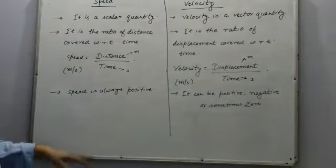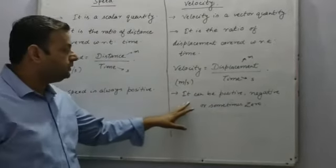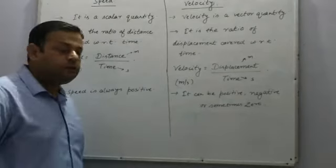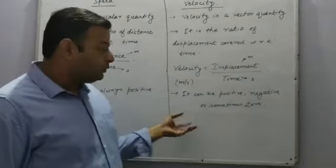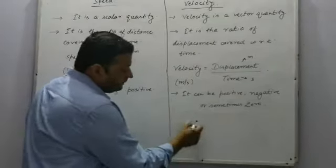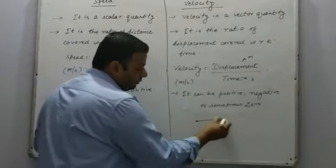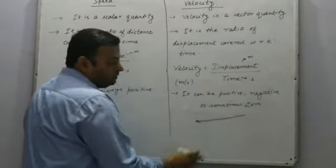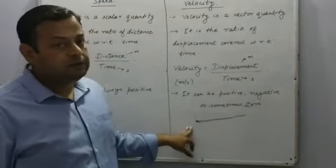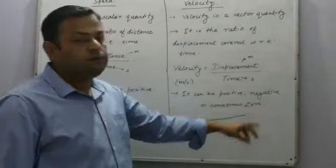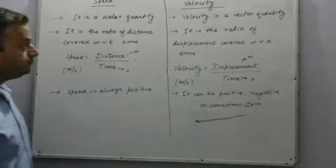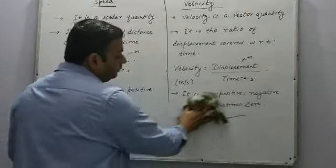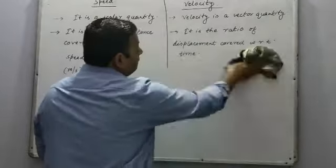Speed is always positive, whereas velocity can be positive, negative, or sometimes zero. Suppose a person starts a journey from a point, goes in one direction, and comes back — the displacement will be zero and therefore the velocity will also be zero.